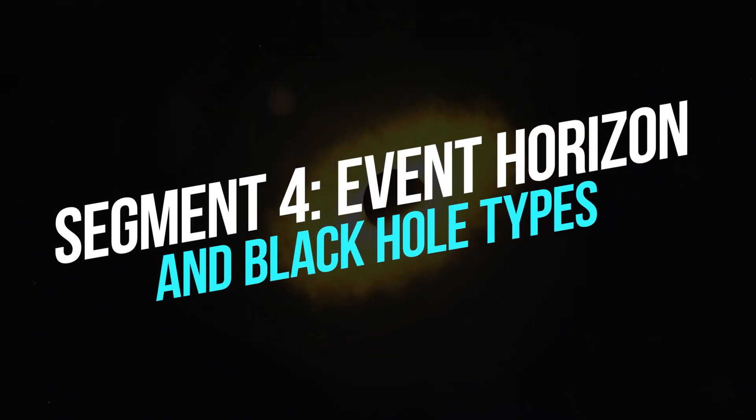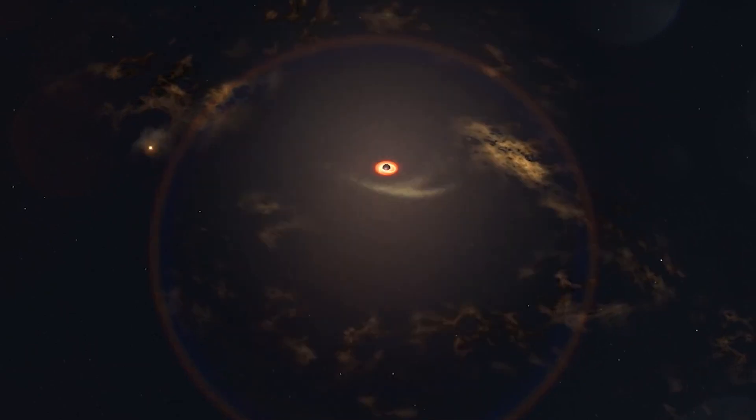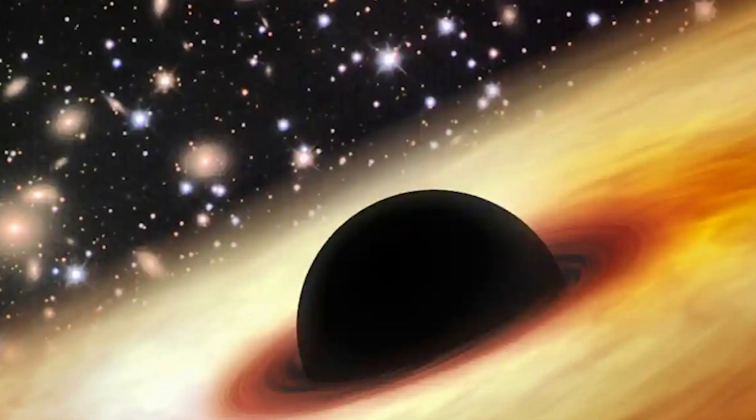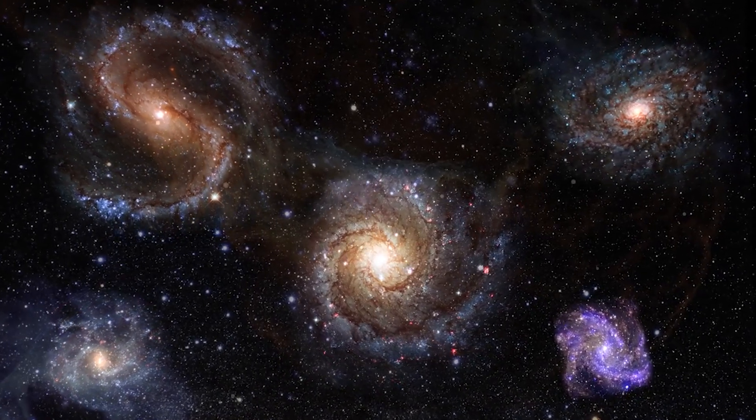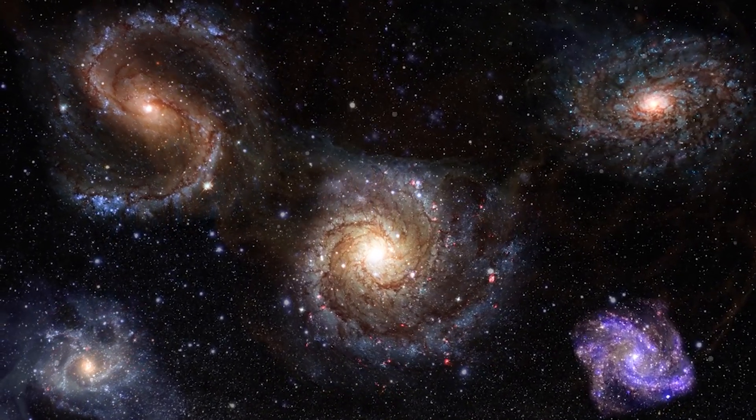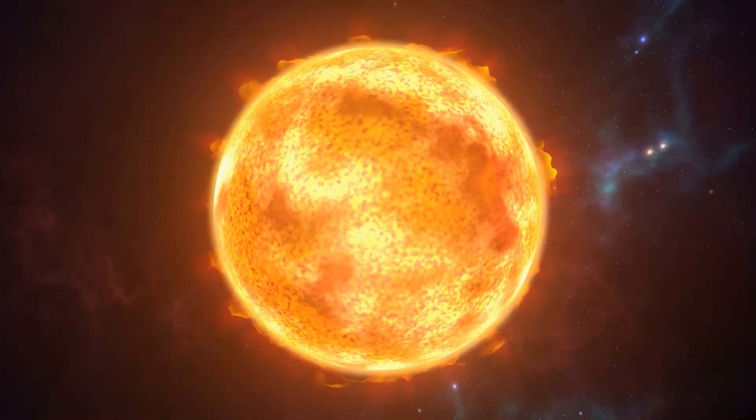Segment 4. Event Horizon and Black Hole Types. Black holes come in various sizes. Stellar black holes have masses several times greater than our sun, while supermassive black holes are found at the centers of galaxies and have masses millions or billions of times that of our sun. Let's explore the different types and their effects on surrounding space.